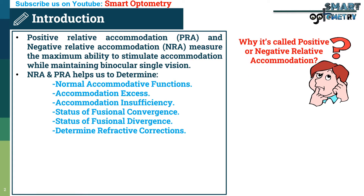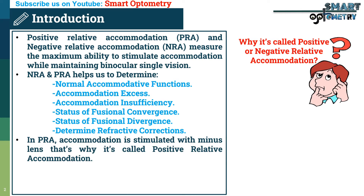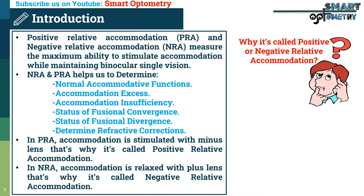The question is: why is it called positive or negative relative accommodation? In positive relative accommodation, accommodation is stimulated with minus lenses — that's why it's called positive relative accommodation. In negative relative accommodation, accommodation is relaxed with plus lenses — that's why it's called negative relative accommodation.